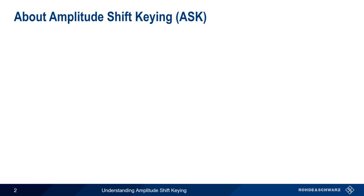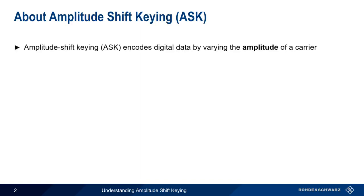As the name implies, Amplitude Shift Keying, or ASK, is used to encode digital data by varying the amplitude of an RF carrier.